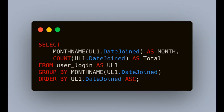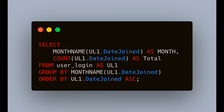Here is the first step of the query. In this query I have counted how many records we can get in a particular month. If there is a January month and there are four records available, this will give us one column as a month name and one column as the total count. The MONTHNAME function gives us the name of the month — if month is one, it will give us January as output. The COUNT function gives us how many records are available in that particular month.